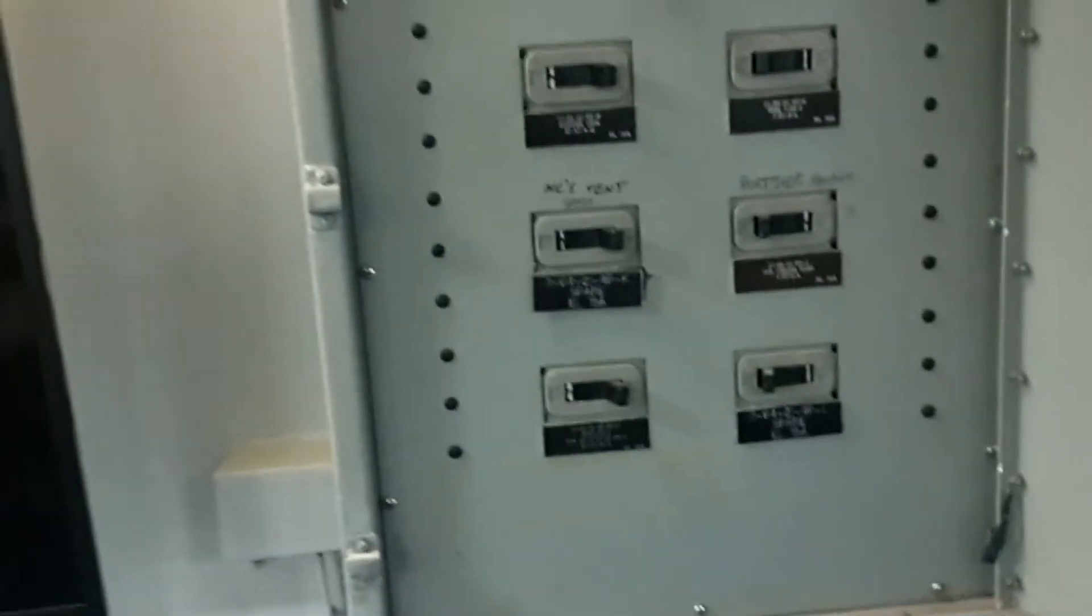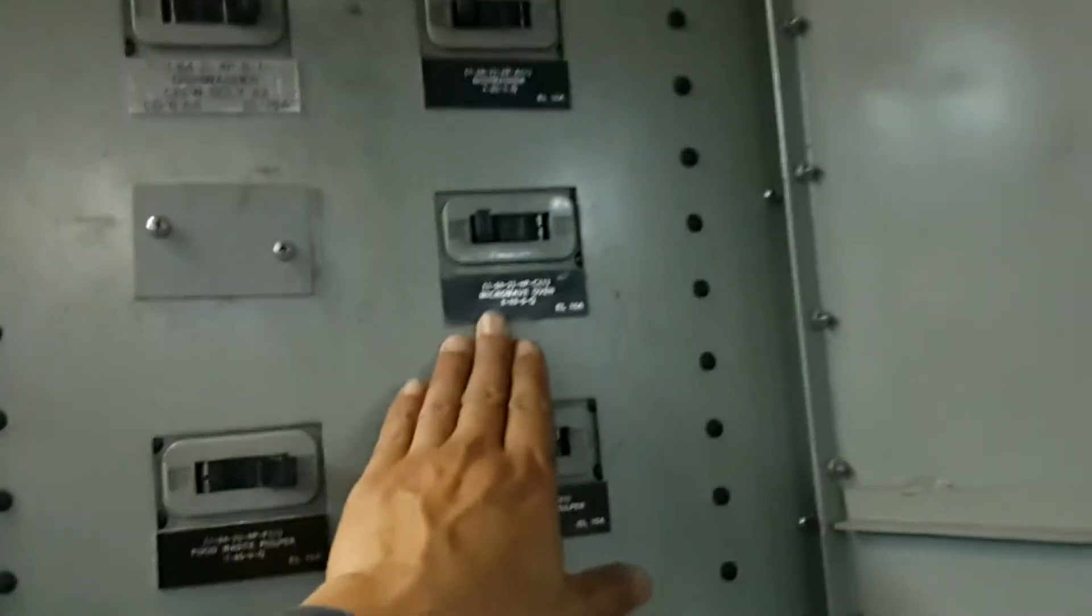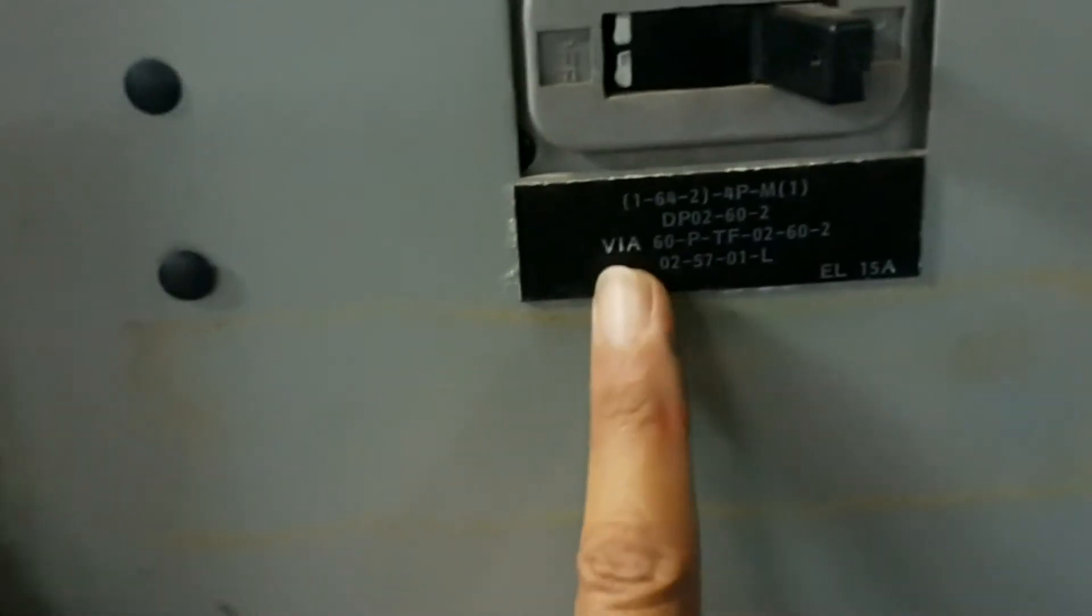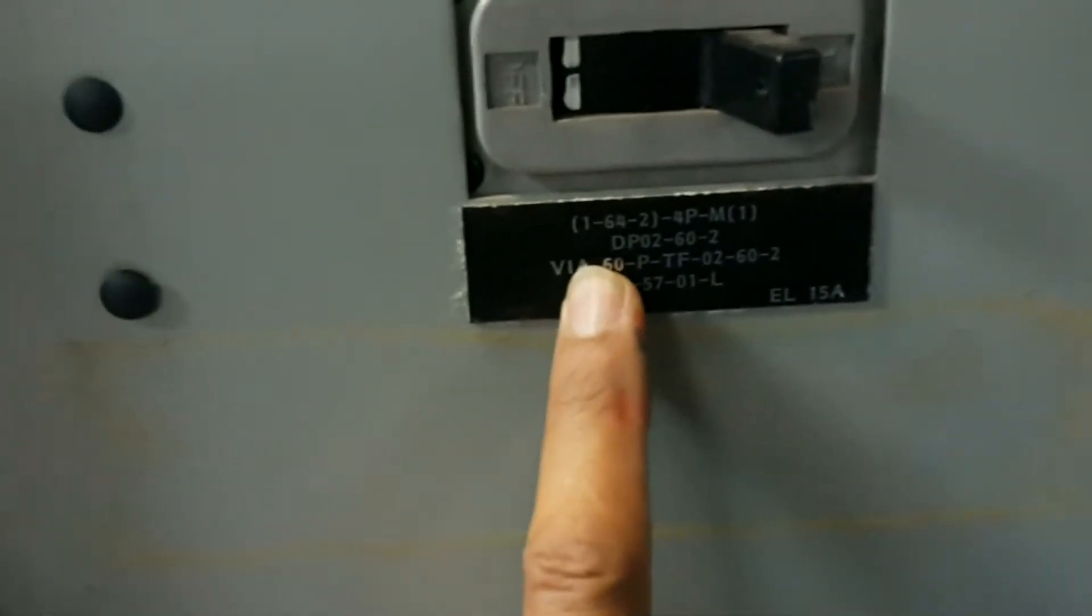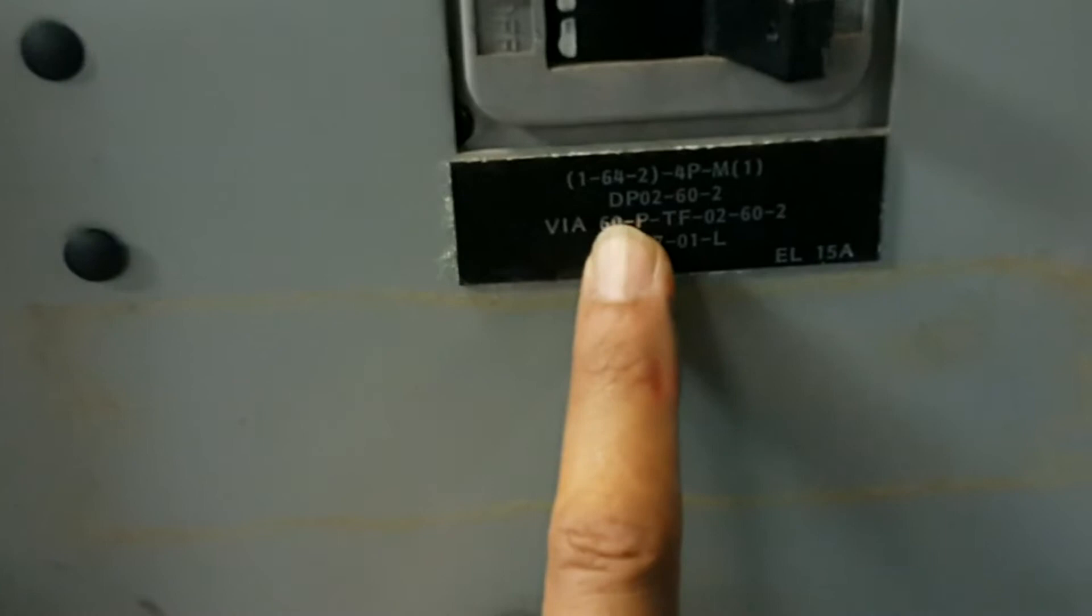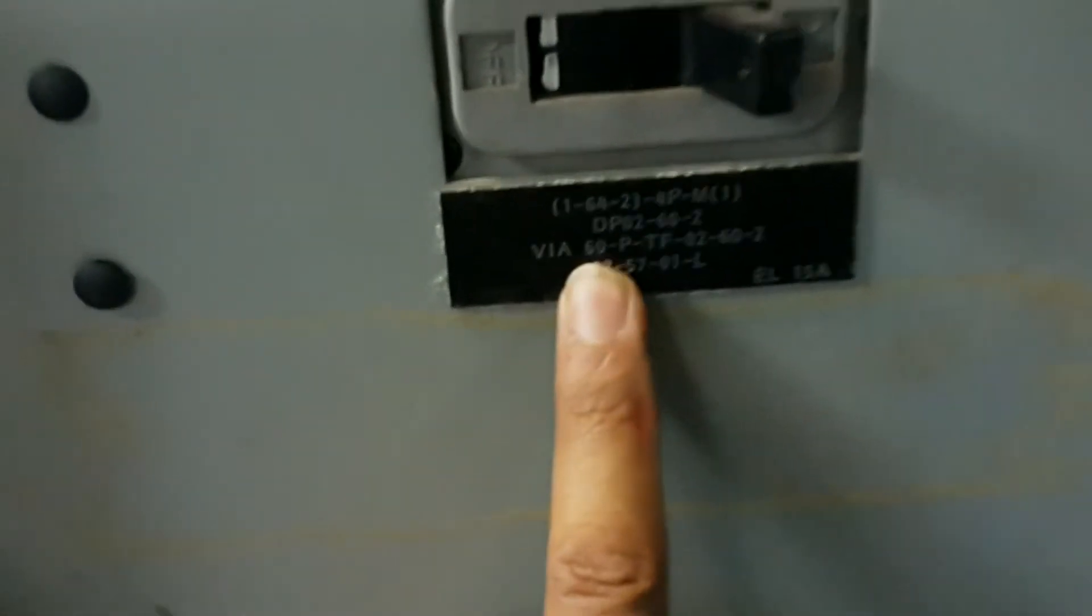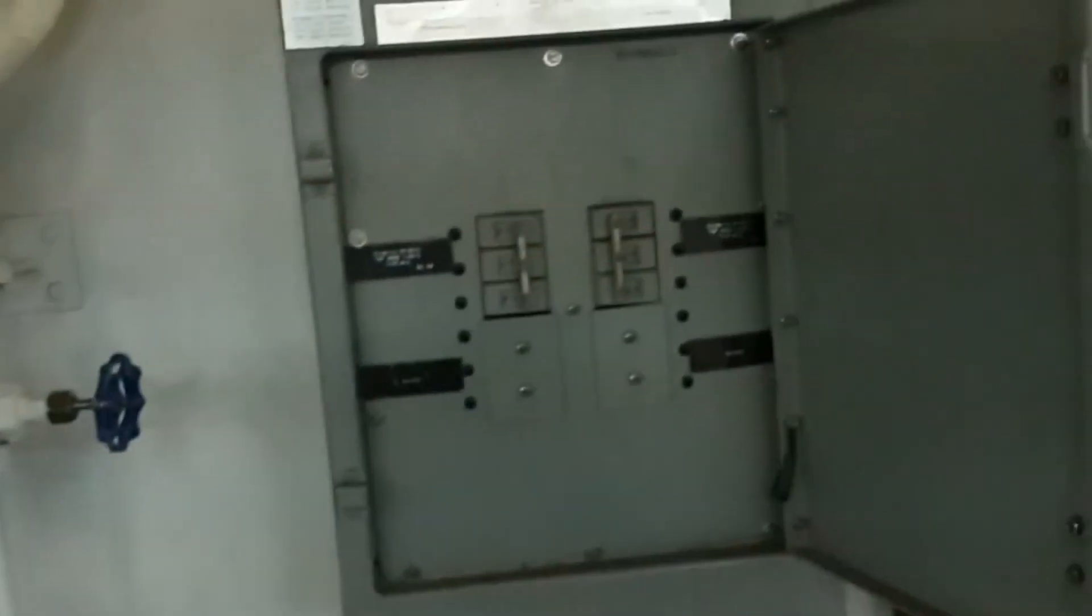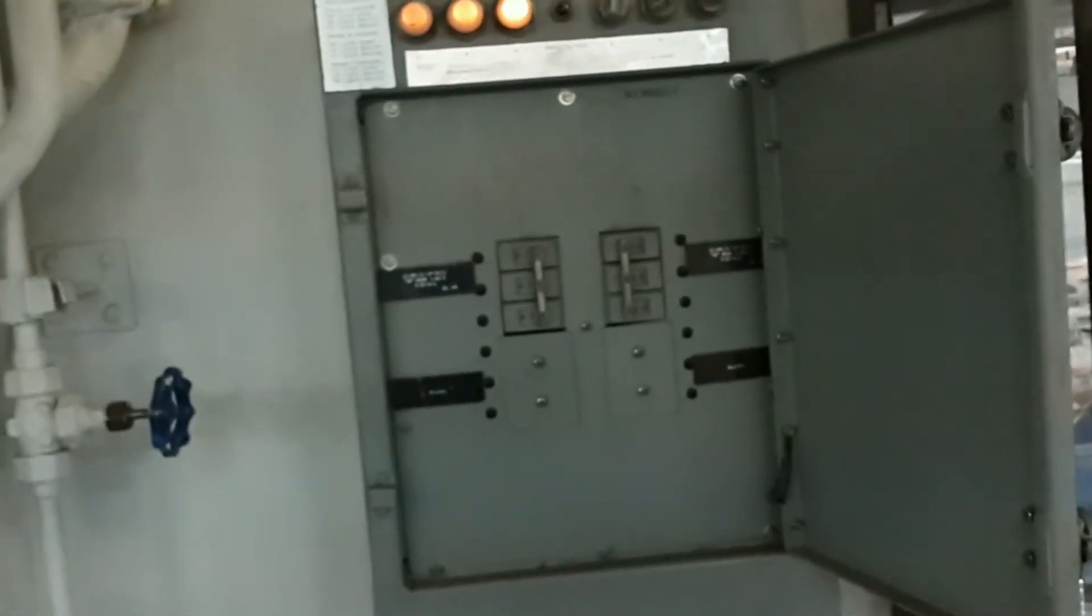Load centers typically feed power panels. Here's the power panel. The loads on the power panel are much smaller. Some of these loads are equipment itself, like this one happens to be a microwave. But this breaker, in particular, it feeds what is called a distribution panel, which means it's a smaller power panel, like this little guy. So, power has been cascading all the way from the switchboard, to the load center, to the big power panel, to this little power panel.